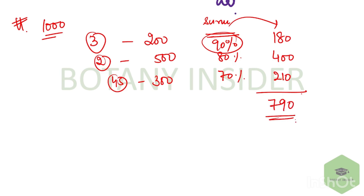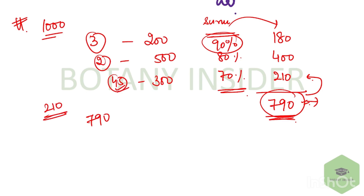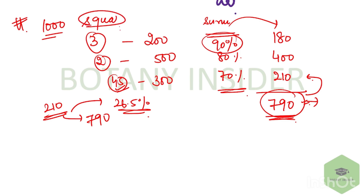Total adults that survived were 180 plus 400 plus 210, which equals 790. The question asked: what is the percentage of four-strip squirrels surviving in the final adult population? Four-strip survivors were 210 out of 790 total survivors, giving approximately 26.5%. This was again a very simple percentage question worth two marks.